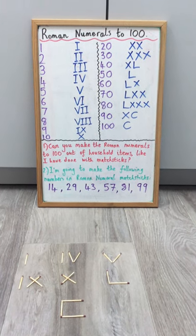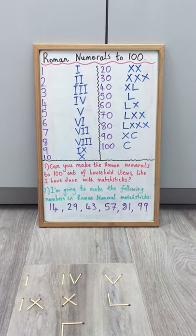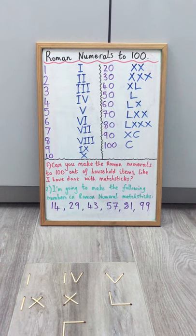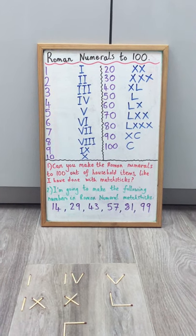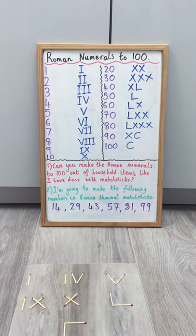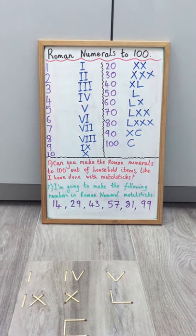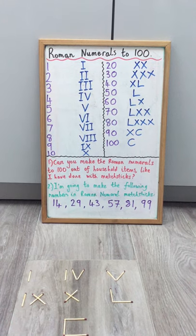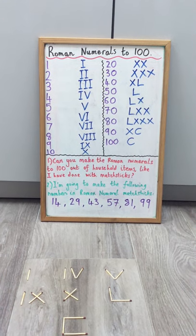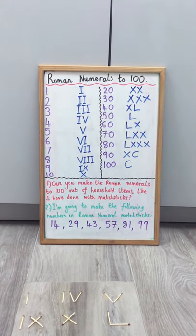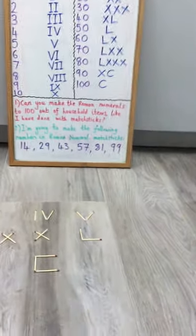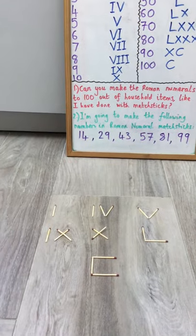So the first one number 14, when you make these it's really good to think about each number in terms of tens and units and that will really help you to create these numbers accurately. So 14 I know is made up of one ten and four units. So the first thing I'm going to do is make that ten. Ten as we know is our X so I'm going to make that X to start with.